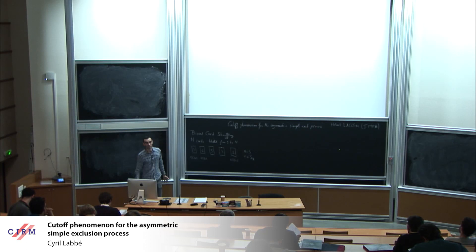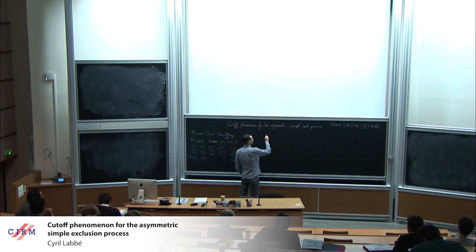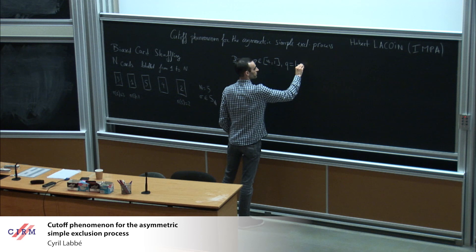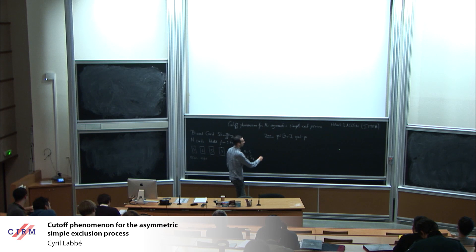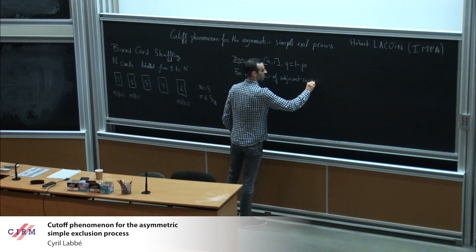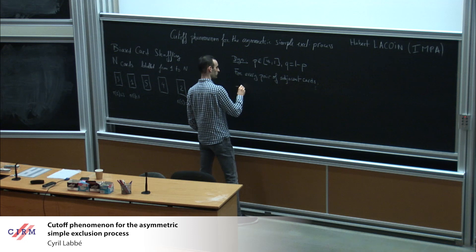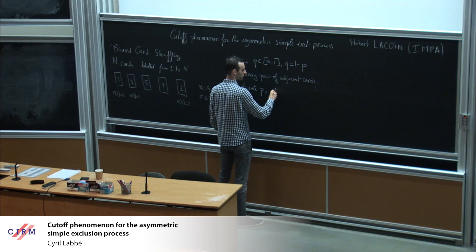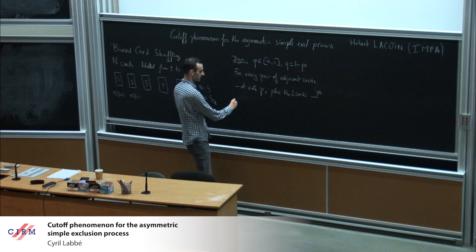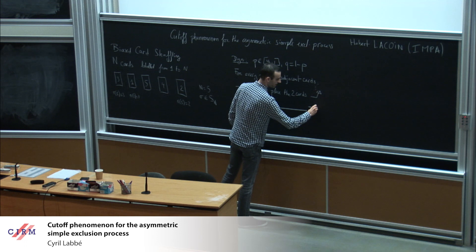Now the dynamics is the following stochastic dynamics. I am given some p in (1/2, 1), and I let q be the complement of p. In continuous time, for every pair of adjacent cards, I do basically two things.